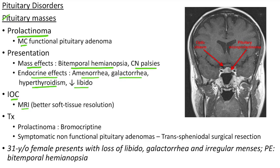This picture shows MRI of a pituitary microprolactinoma. This is the optic chiasm. As you can see, the pituitary prolactinoma compresses the optic chiasm leading to bitemporal hemianopsia. For treatment, for prolactinoma we can give bromocriptine. For symptomatic non-functional pituitary adenoma we can do transsphenoidal surgical resection.